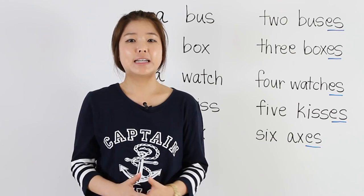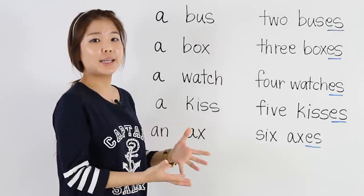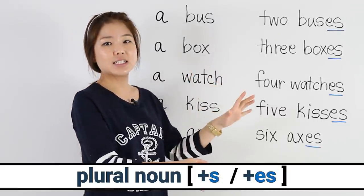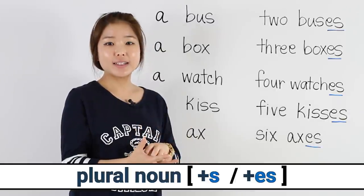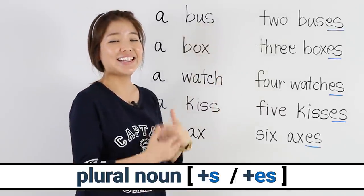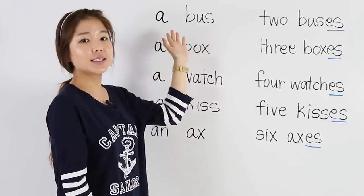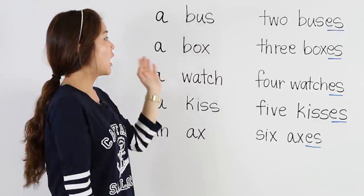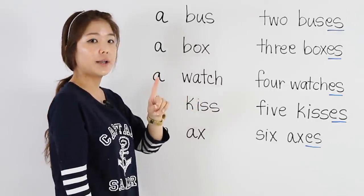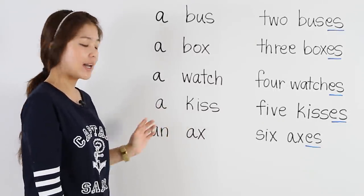Now we have some more nouns. These nouns are a little bit different. When they're singular, it's the same — you put 'a' or 'an' in front. But when you want to make them plural, you have to add ES. So we have: a bus, a box, a watch, a kiss, and an axe.